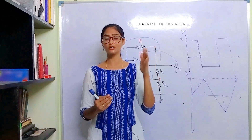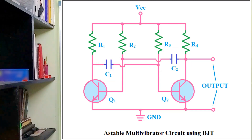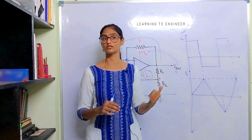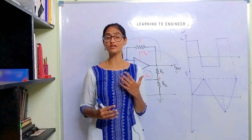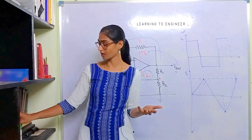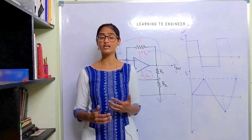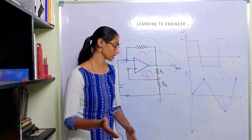This circuit can be constructed in many methods. The circuit you see on the screen uses capacitive coupling and is designed using BJTs. The working is similar, and in different configurations you can apply the operational amplifier and get the kind of output you want.